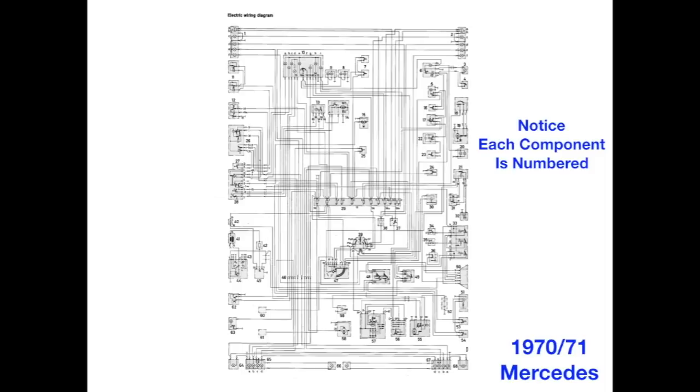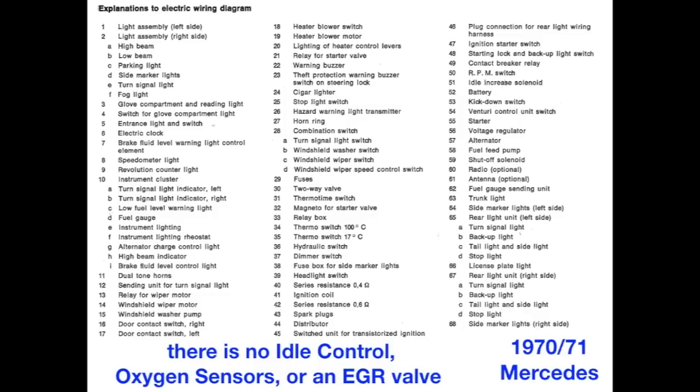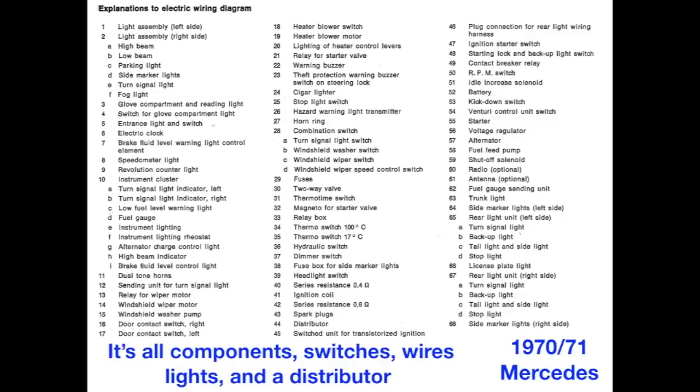Notice in this diagram that each component is numbered, so we have to refer to the numbered component chart to see what's in there. Notice that there is no ECM, or any other logical control at all. There is no idle control, no oxygen sensors, or even an EGR valve. It's all components, switches, wires, lights, and a distributor.